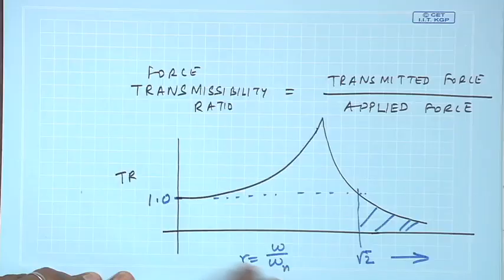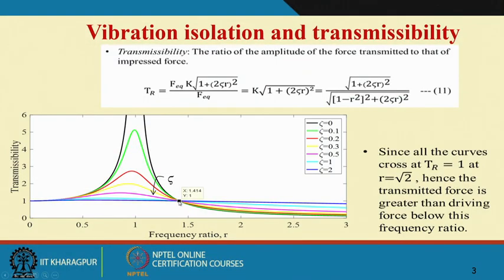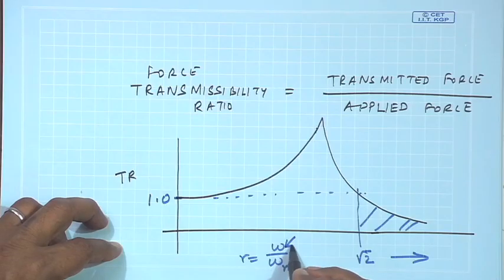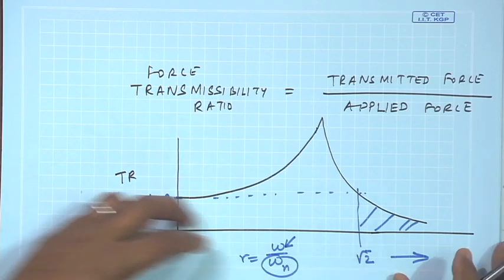That means FTR is less than 1, so whatever is the applied force, the transmitted force will be less than the applied force. If the forcing frequency is not in my control, all I can do is change ωn, and that is the basic principle behind designing isolators.